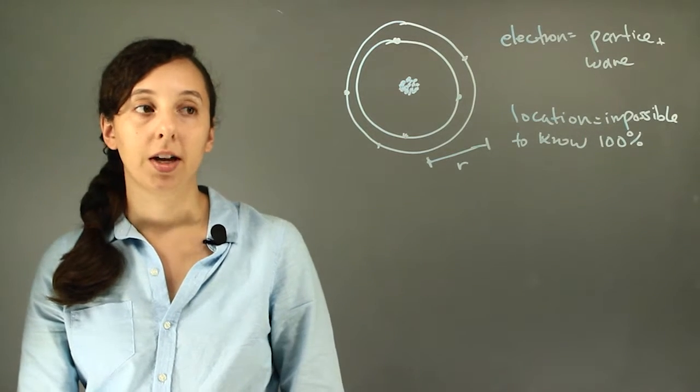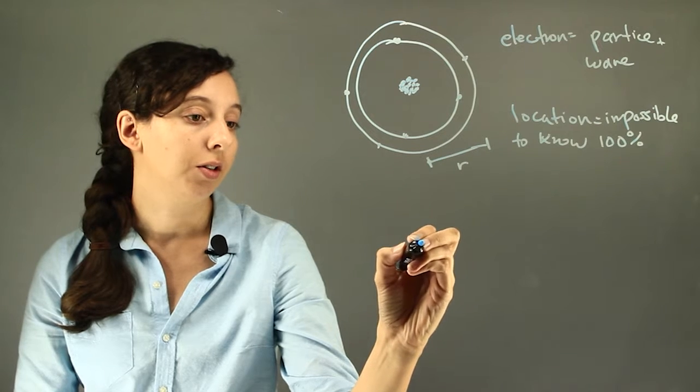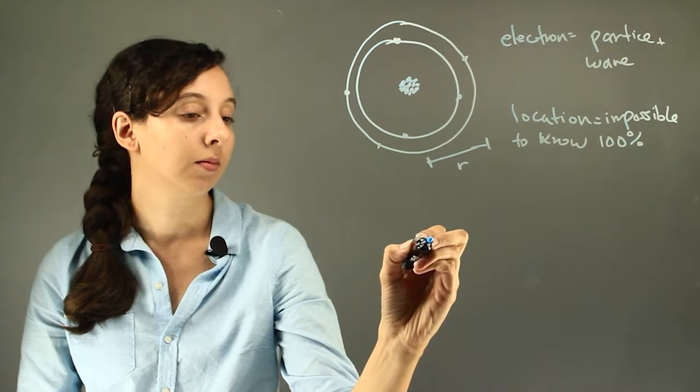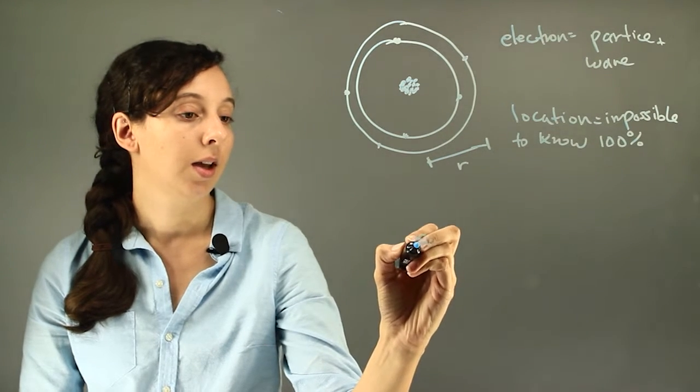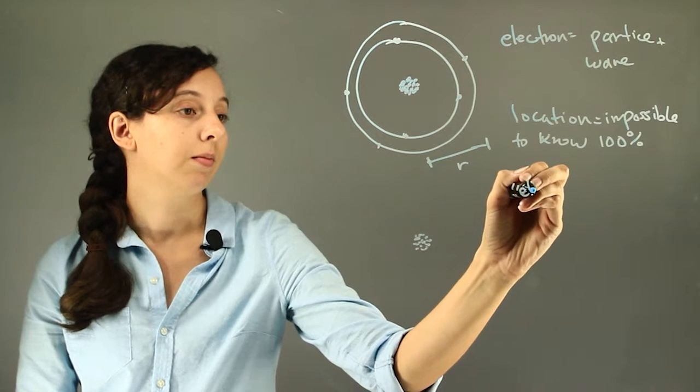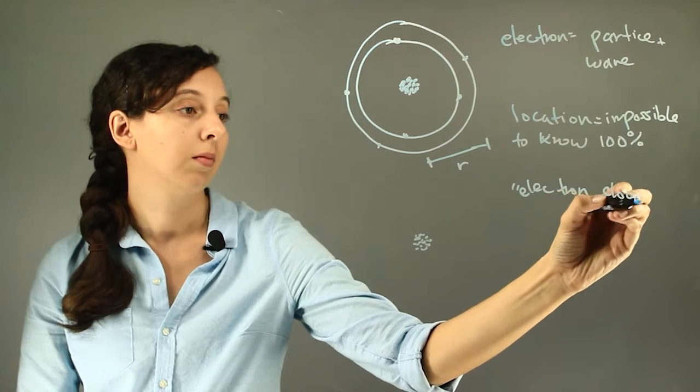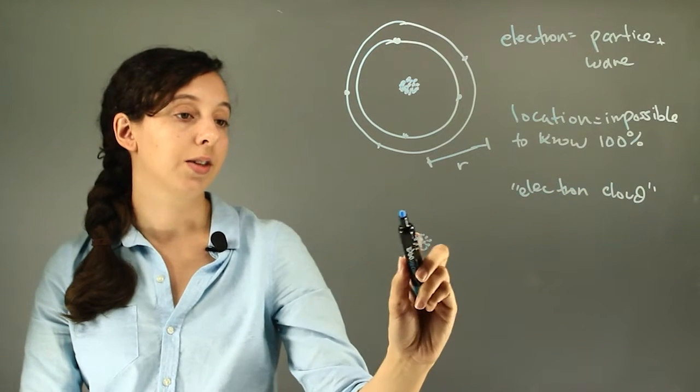And so what we have, when we actually draw atoms, is more like our nucleus. And then you'll see people draw it as an electron cloud. And so that's more like this.